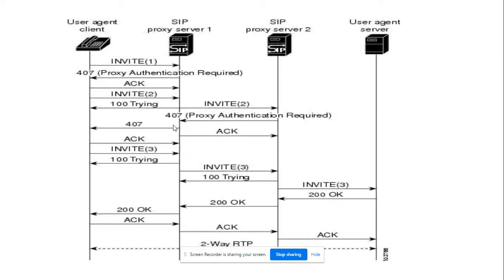To summarize the flow: you send an INVITE, the proxy responds with 407 Proxy Authentication challenge, then the SBC sends an ACK, and then resends the INVITE with the authentication header. Once proxy authentication is successful, the rest of the call flow is normal SIP flow. I am going to walk through this with a Wireshark example.